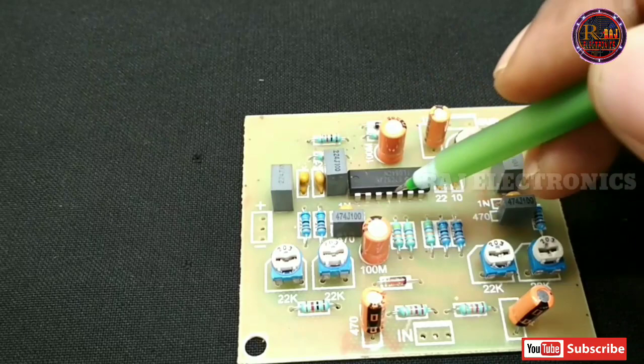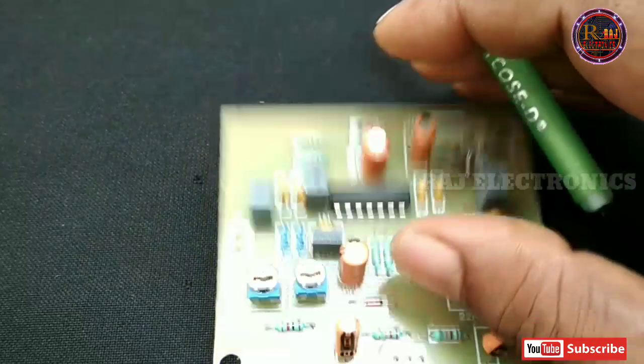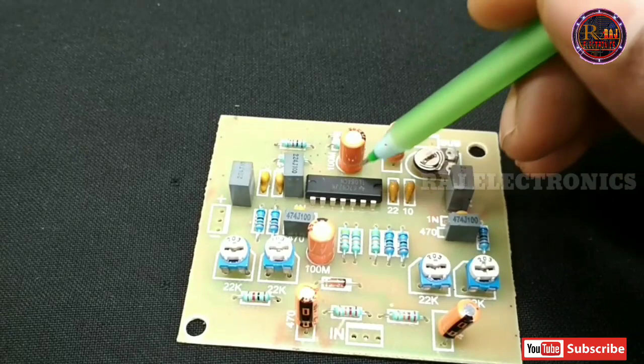Now, we added two zener diodes here. There is one zener diode here and one zener diode here. We added the IC to 12V. The IC is 24V.